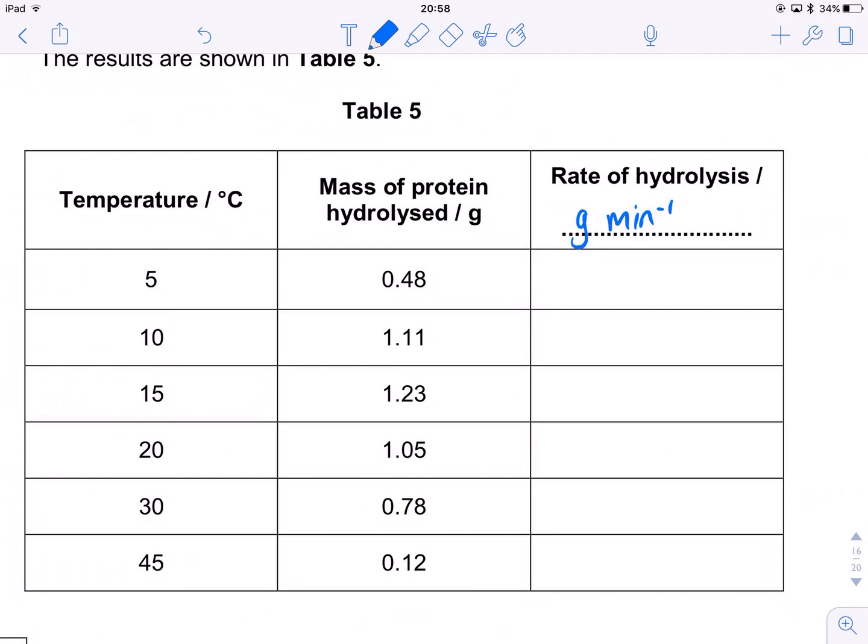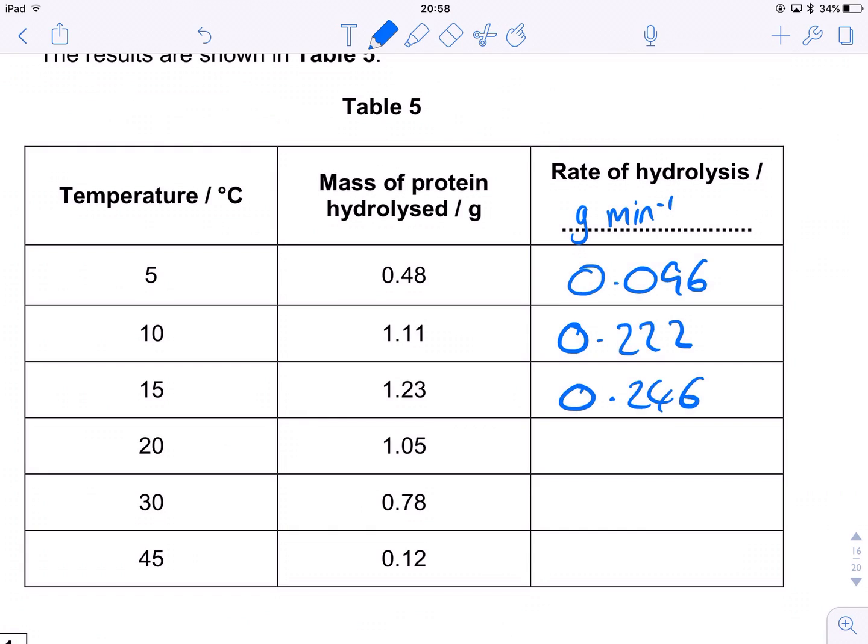0.48 divided by 5 gives us 0.096. 1.11 divided by 5 gives us 0.222. 1.23 divided by 5 gives us 0.246. Good lord, this is tedious. 1.05 divided by 5 is 0.210. 0.78 divided by 5 gives us 0.156. And finally, 0.12 divided by 5 gives us 0.024. And that is our processed results.